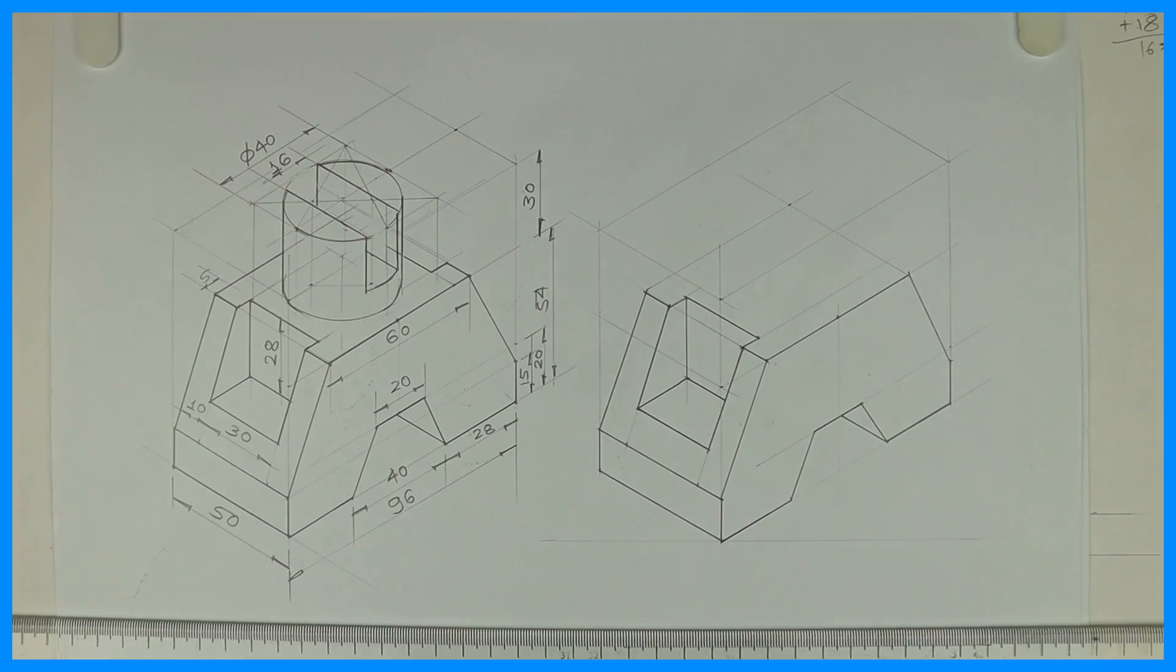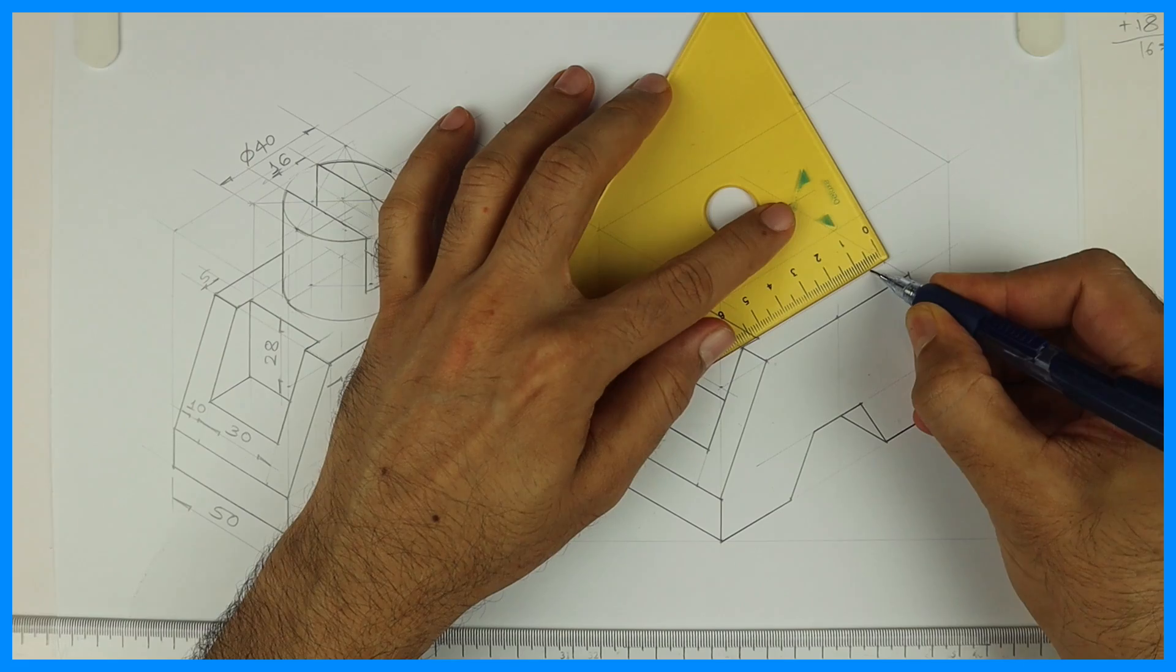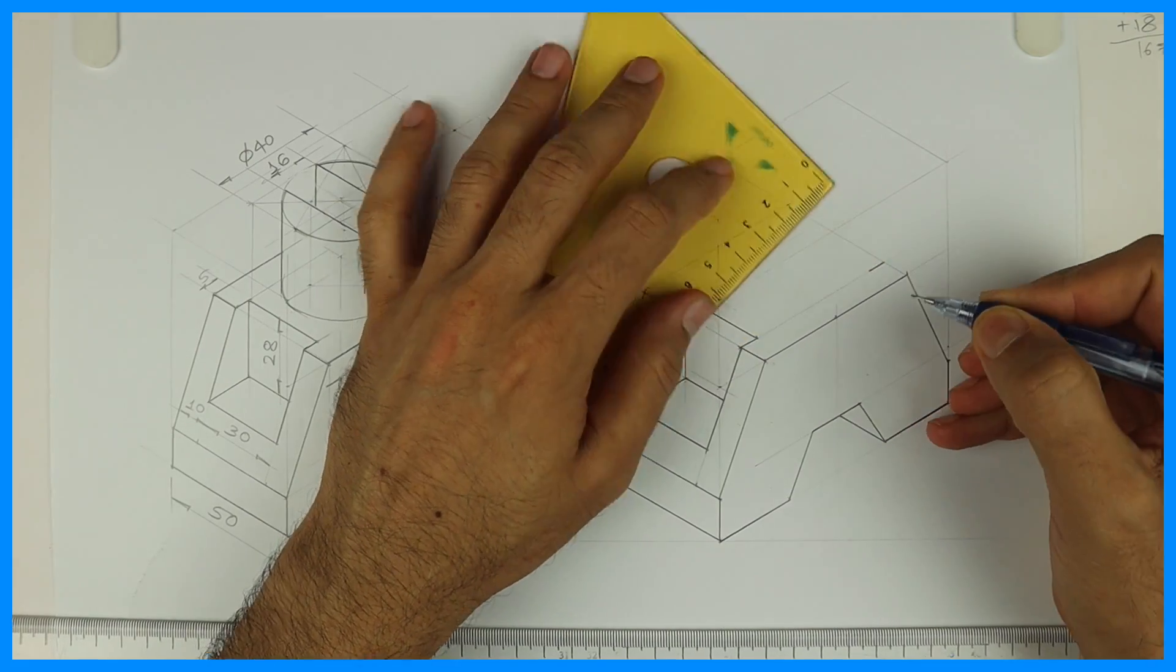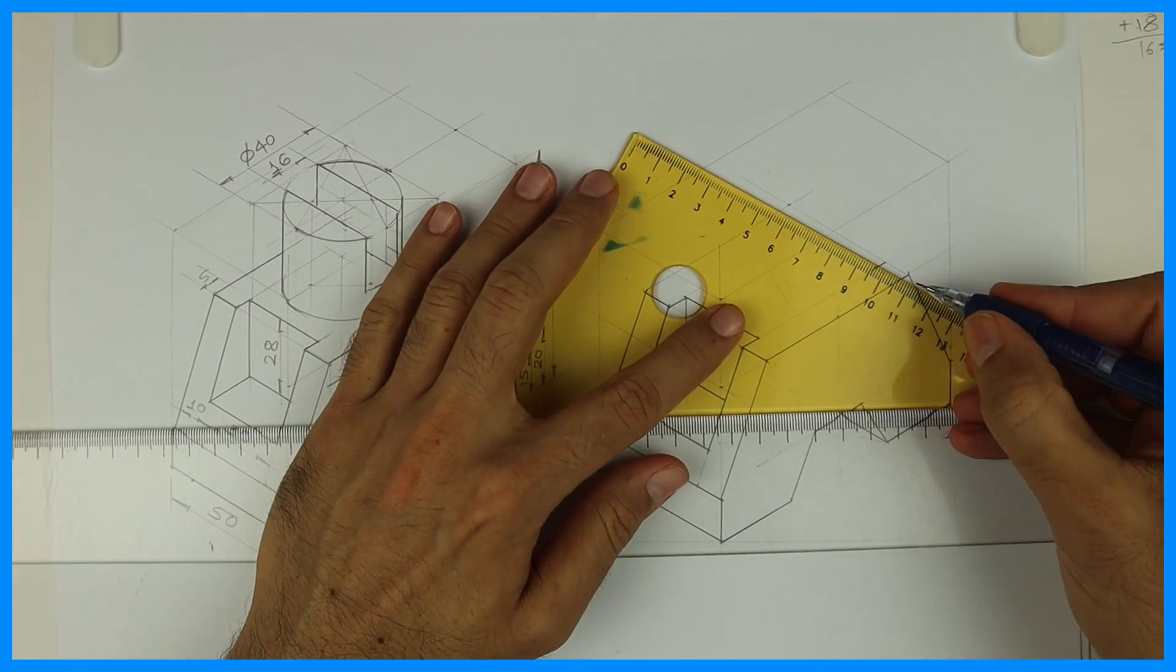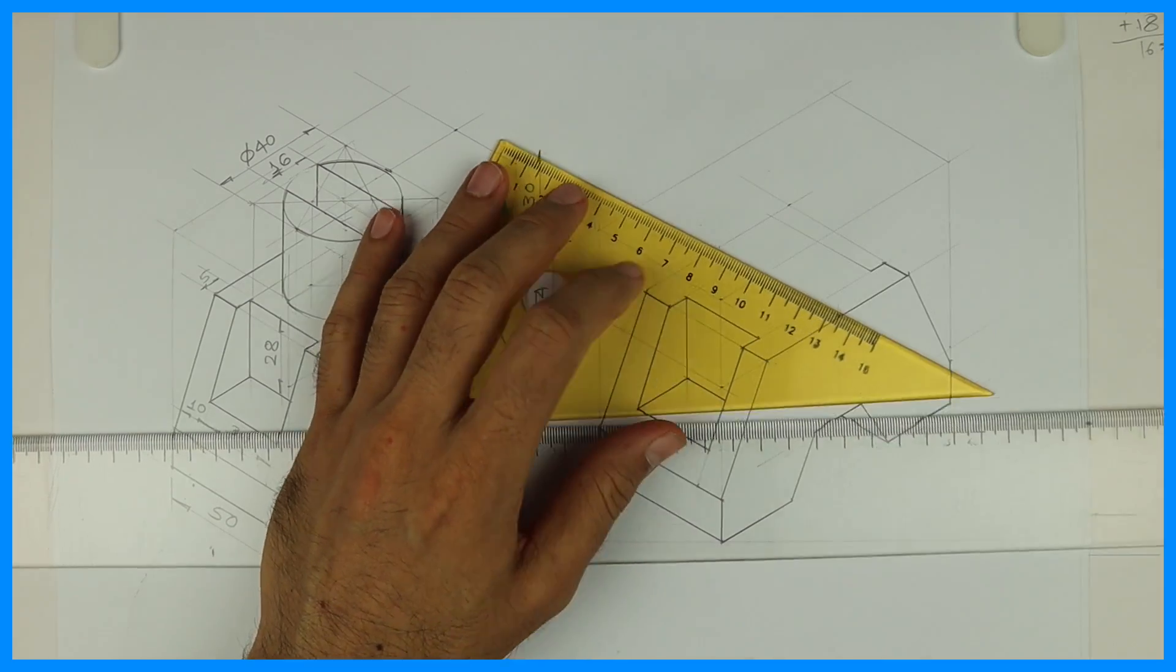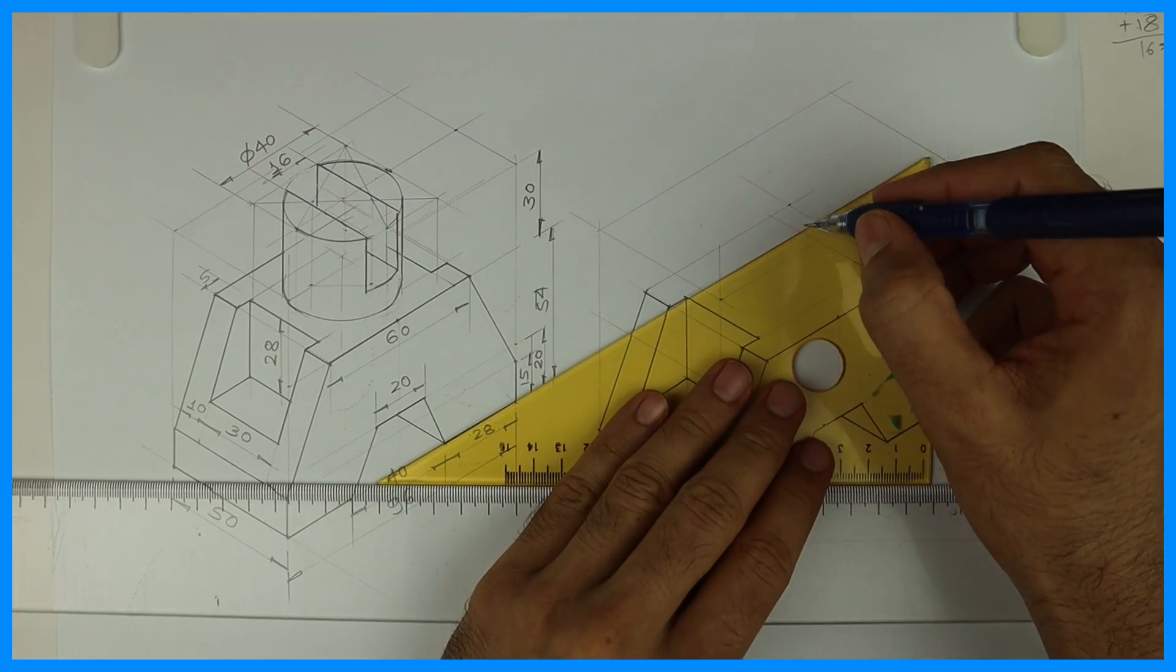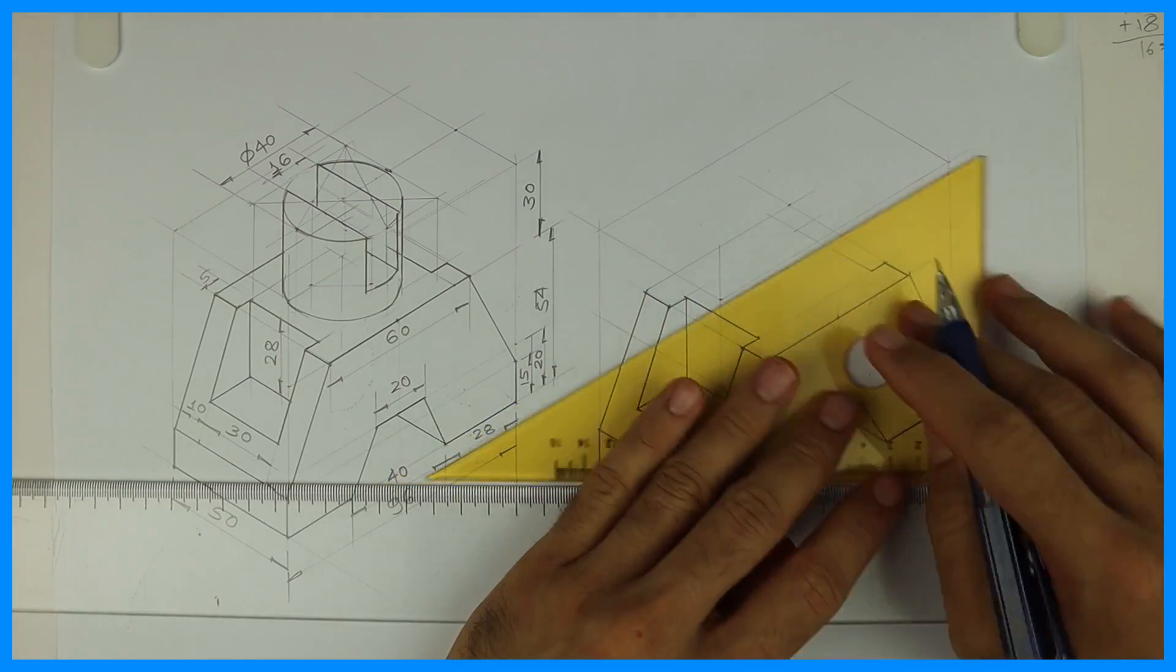Now the same slot is on the other side also. What I can do? I can draw it light. I can't draw full dark because I know that there is one more part. So because of that I can't see the behind portion. So I need to draw that part very light.